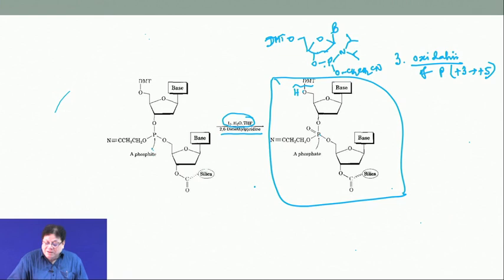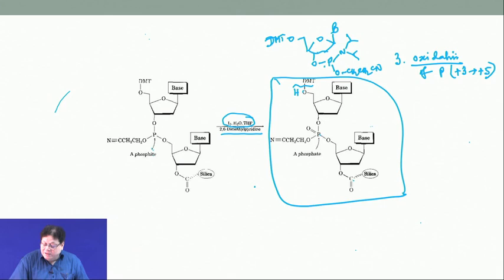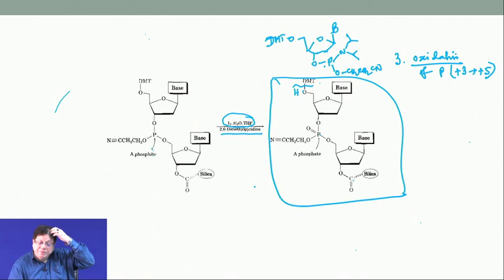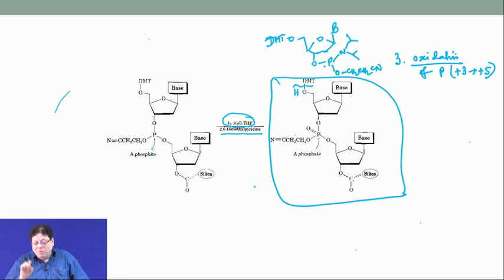To make a dinucleotide and stop there: at that point you have all the protecting groups in place — the 3-prime OH attached to silica, the base amines benzoylated or acetylated, the 5-prime OH protected as DMT, and the cyanoethyl group on the phosphorus. You can extend further if desired, but the last step will be similar.